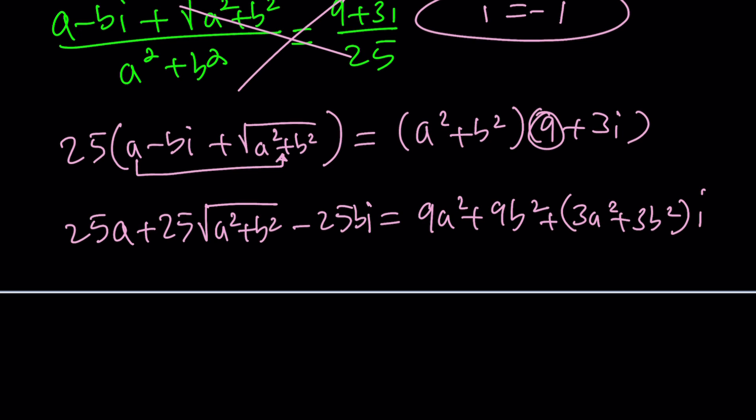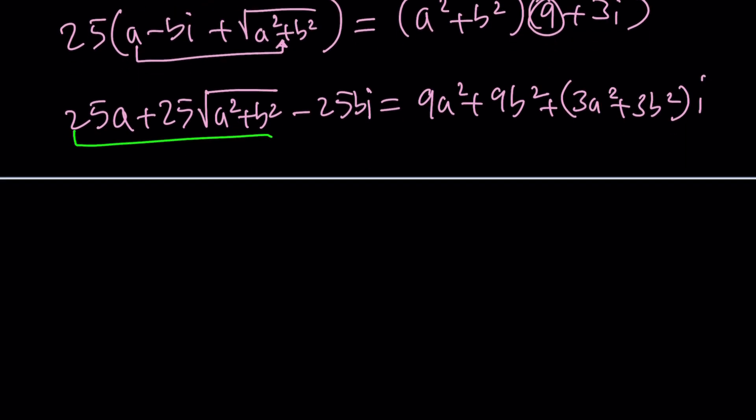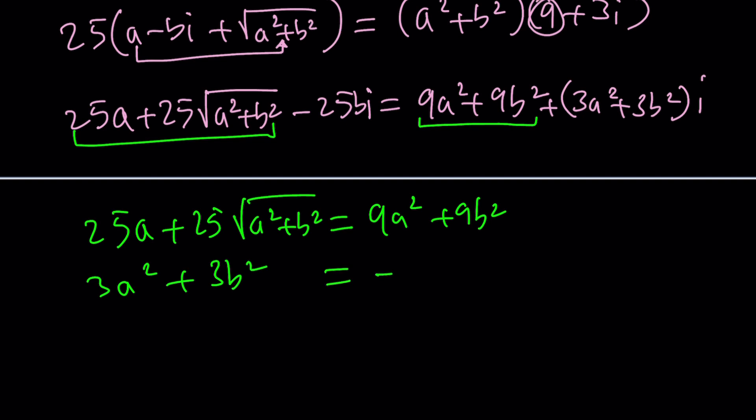So that's this is what it's going to look like. This is the real part this is the real part. Maybe it's not super bad. 25A plus 25 square root of A squared plus B squared is equal to 9A squared plus 9B squared and the other one is going to give us 3A squared plus 3B squared equals negative 25B.